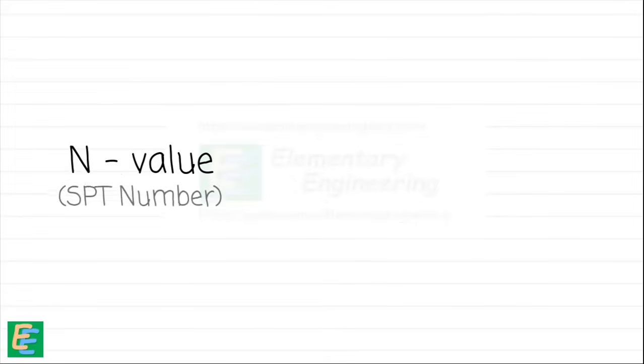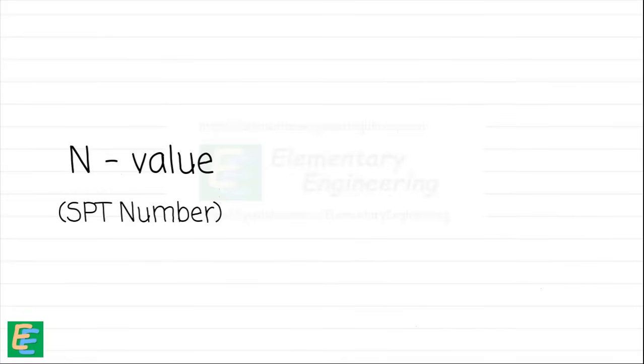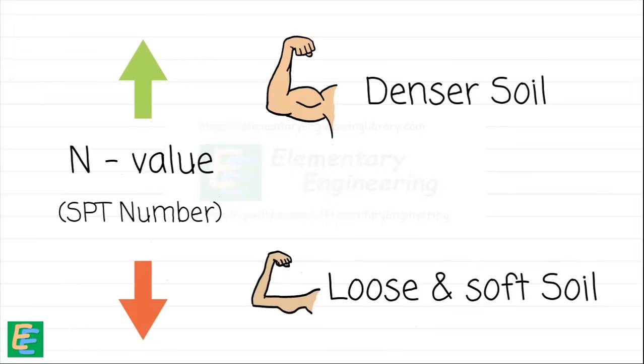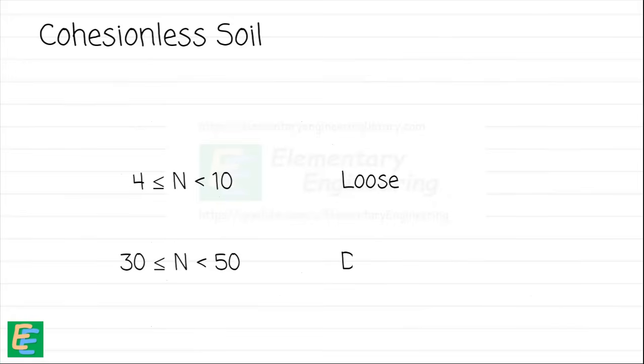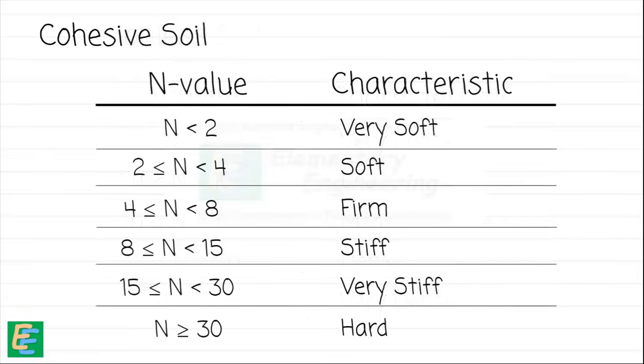The N value or SPT number gives us a direct measure of how resistant the soil is to penetration. In simpler terms, a higher N value indicates stronger and denser soil, while a lower N value suggests that the soil is loose, soft, or weak. If we get the N value between 4 to 10 for a cohesionless soil, the soil is classified as loose. If we get the value between 30 to 50, it is a dense soil. Similarly, we have the whole chart of N values for both cohesionless and cohesive soils.